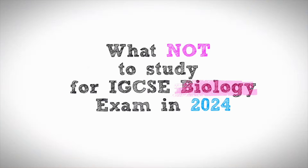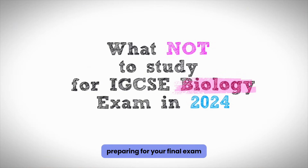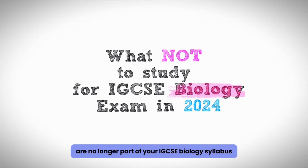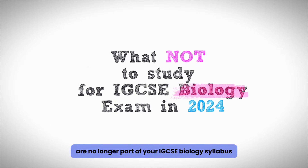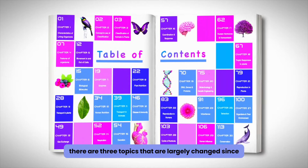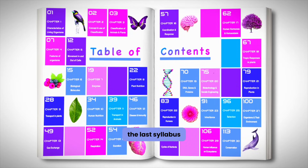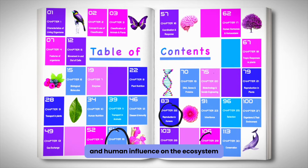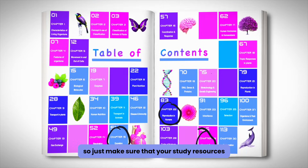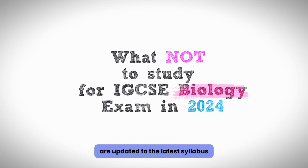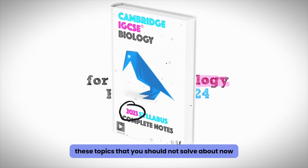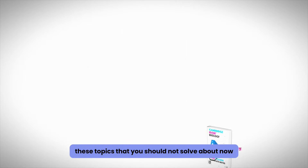Now that you've started solving full past papers preparing for your final exam, it's important to eliminate those topics that are no longer part of your IGCSE Biology syllabus. There are three topics that are largely changed since the last syllabus: excretion, human reproduction, and human influence on the ecosystem. Make sure that your study resources are updated to the latest syllabus — the 2023 syllabus. So what are the topics you should not solve about now?